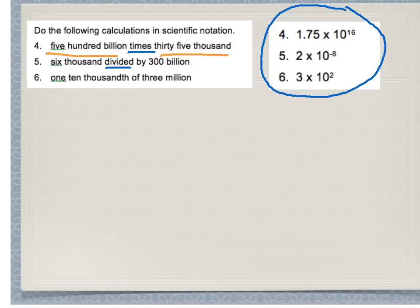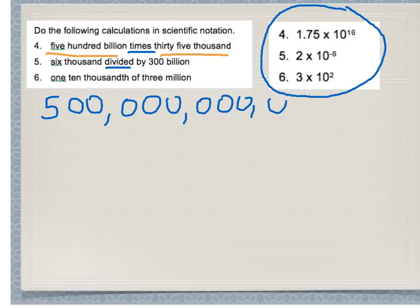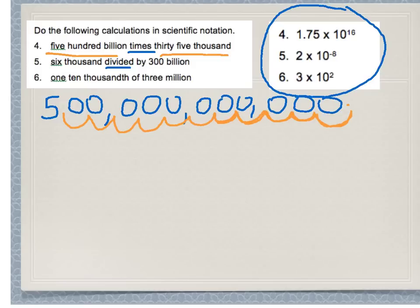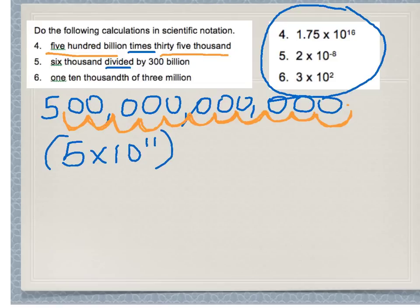The first number is 500 billion. Writing that out — 500, then a thousand, a million, then a billion. Writing that in scientific notation requires moving the decimal point eleven places, giving me 5 times 10 to the 11.